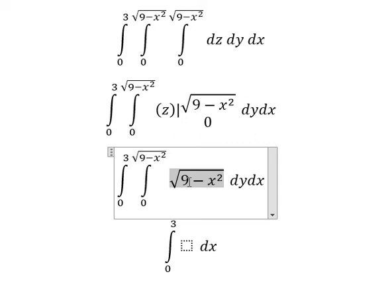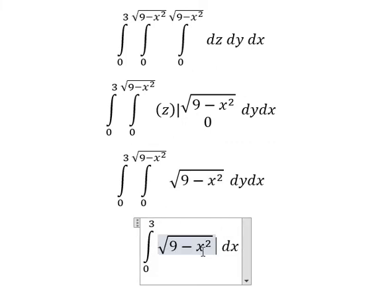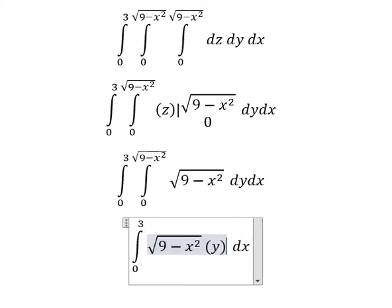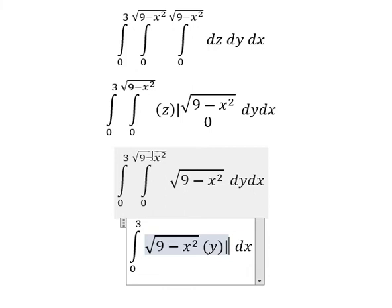We have the square root of this one and we have y with the bounds from zero to the square root of nine minus x squared.